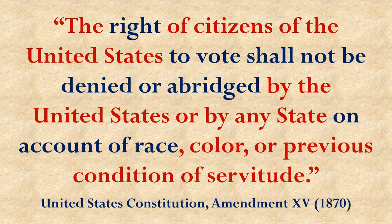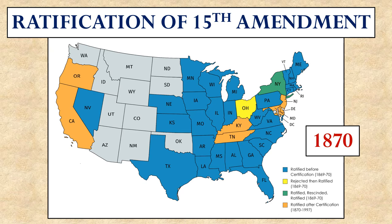Eventually enough states gave in, the 15th Amendment was ratified, and it said that the right to vote cannot be denied to anyone on the basis of race. This allowed the freed Blacks in the South — former slaves now freed — to participate in their local elections. Unlike the 14th Amendment, the 15th was ratified a little more easily, because most states had already accepted the 14th and knew they had lost this political battle.